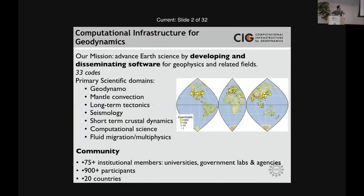A few key slides about CIG: the mission of CIG is developing and disseminating software for geophysics and related fields. This applies to a large number of scientific domains — geodynamics, mantle convection, long-term tectonics, seismology — so it's much larger than just tectonics.